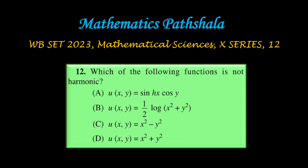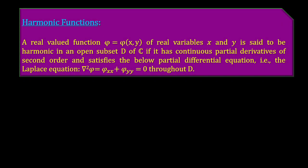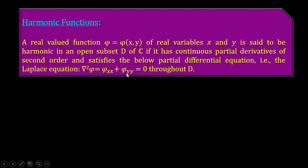To solve this problem we have to know when a function is said to be harmonic. A real-valued function φ(x,y) of real variables x and y is said to be harmonic in an open subset D of the complex number set C if it has continuous partial derivatives of second order and satisfies the Laplace equation: φ_xx + φ_yy = 0 throughout D.